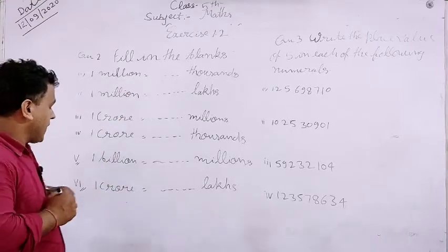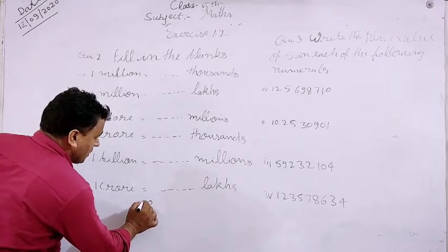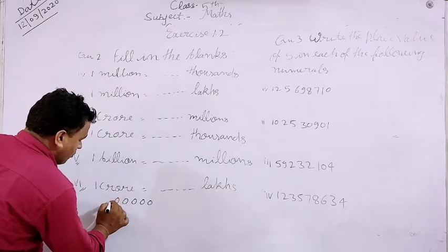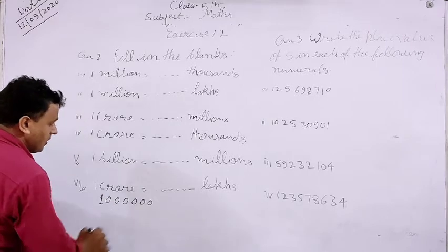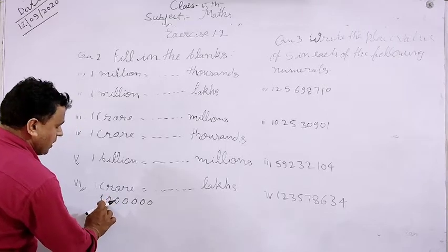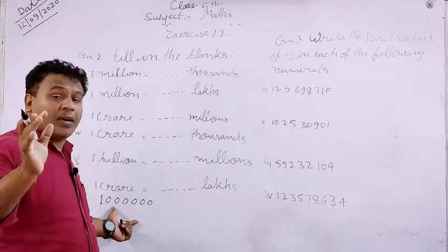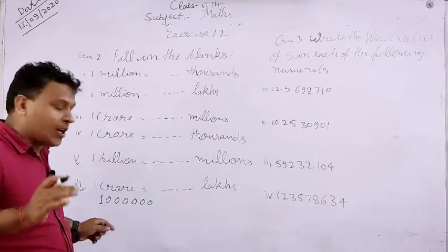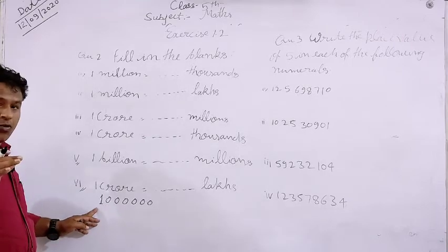Pehle one million yahan pe note karenge. One million kaise likha jaata hai — dekhiye: ones, tens, hundreds, thousands, 10,000, 1,00,000, and million. International System mein kya hota hai: 10,000 ke baad 1,00,000 jaata hai, uske baad million hota hai. But Indian System mein: ones, tens, hundreds, thousands, ten thousands, phir lakh, aur ten lakh ho jaata hai.